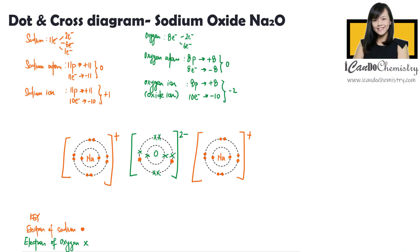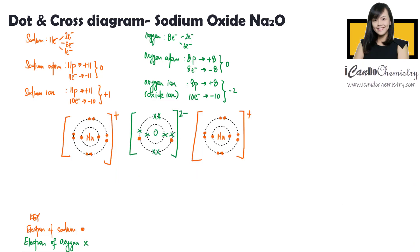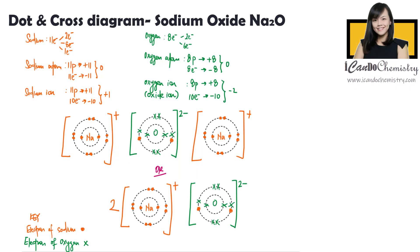You realize there are two sodium ions present in this ionic compound. Instead of drawing two sodium ions, we can draw only one of them and put a two in front of the sodium ions. Sometimes in examinations, they will ask you to draw only the outermost electrons. Hence, we can omit the inner shells and this is what you should draw.